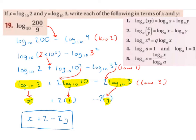So 200 breaks down to 2 times 10 squared, and this multiplication sign becomes a plus. We have log base 10 of 2, then log base 10 of 10 squared, and then minus log base 10 of 3 squared — because 9 becomes 3 squared. The 2 and the 3 are highlighted because we're trying to get 2s and 3s involved in our logs, matching x and y from the question.